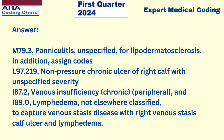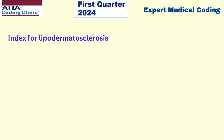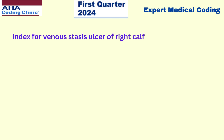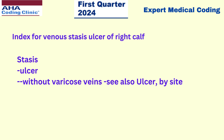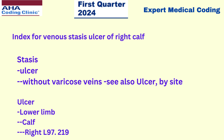Now let's see these codes in the index. For lipodermatosclerosis, go to the index and search for the term lipodermatosclerosis — you will get the code M79.3. For the venous stasis ulcer of the right calf, go to the index with the main term stasis, under the sub-term ulcer, and without varicose veins. It will lead you to a 'see also' instruction: ulcer by site. Then go to ulcer as the main term, under the sub-term lower limb, under that calf and right — it will lead you to the code L97.219.